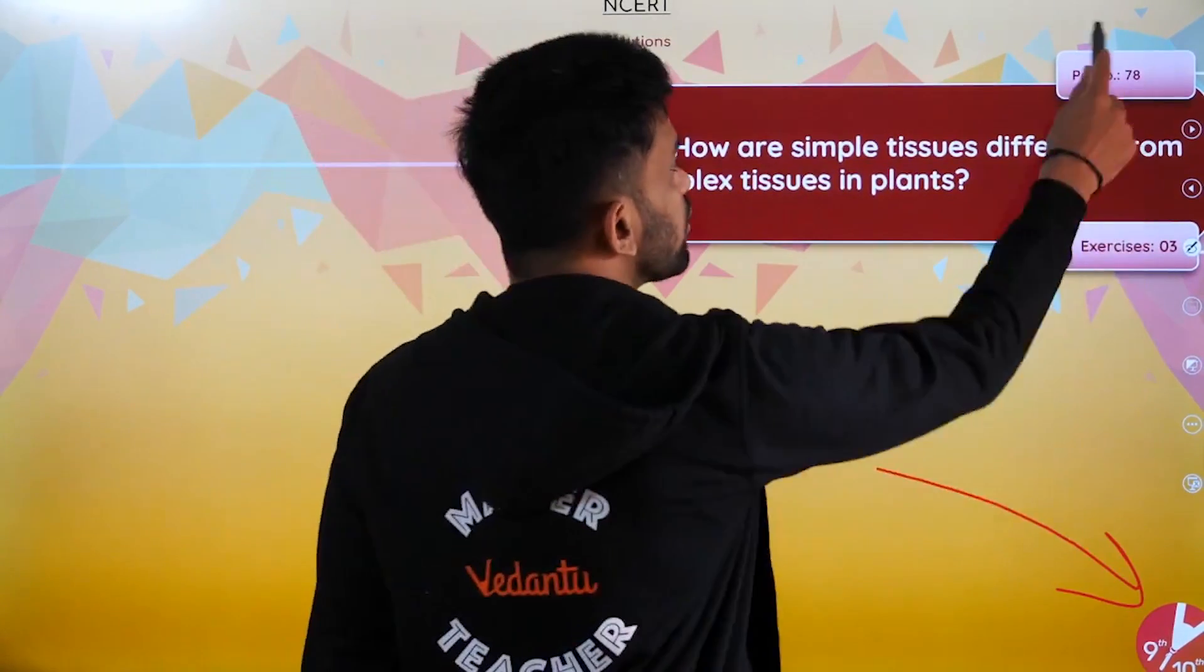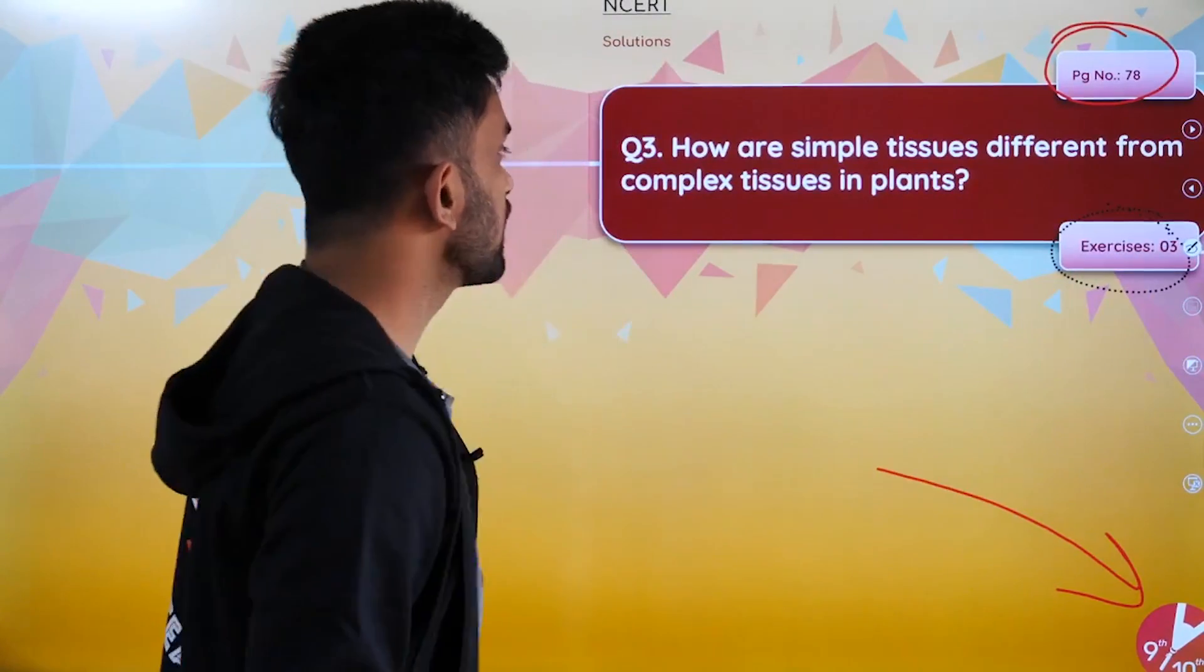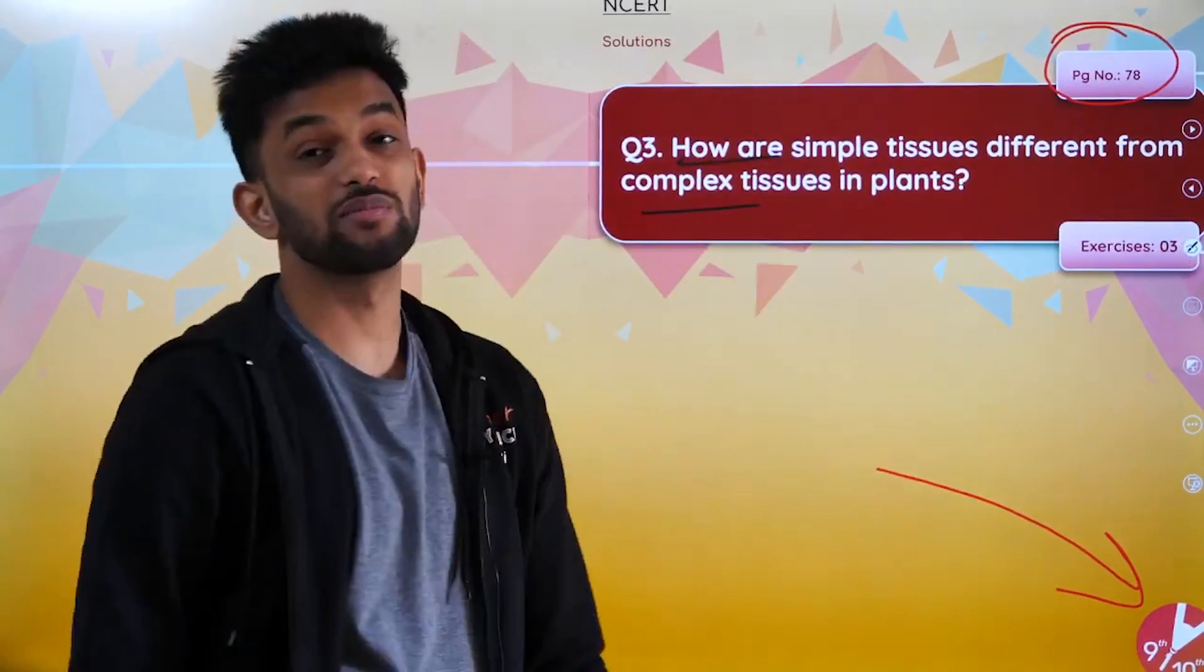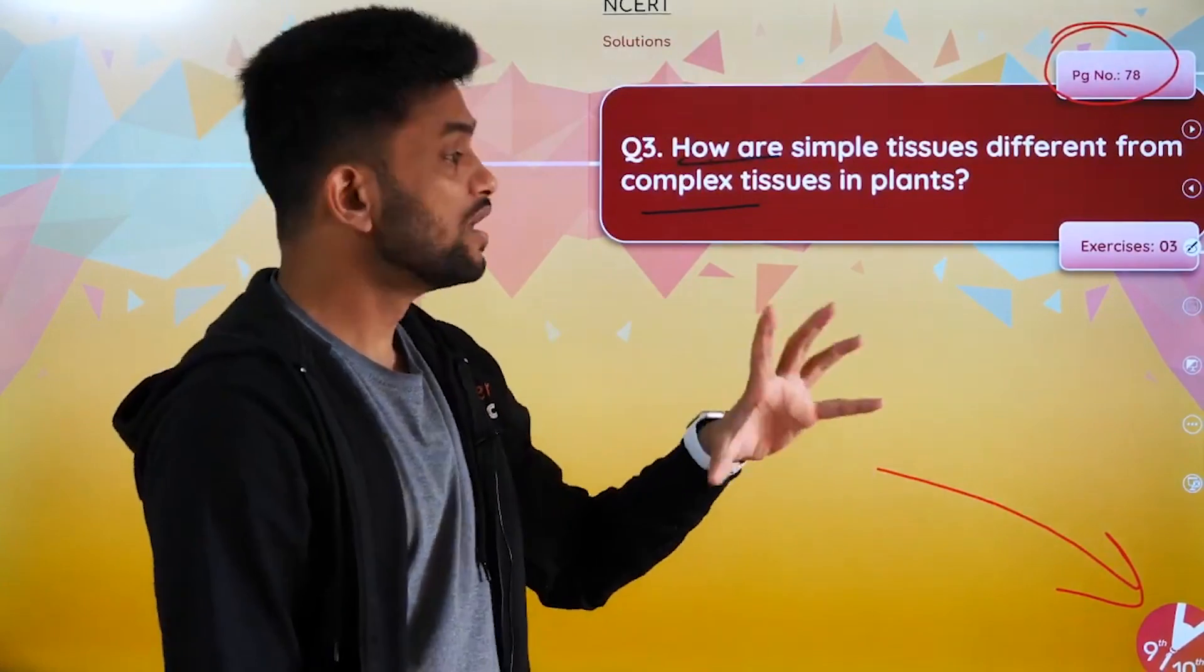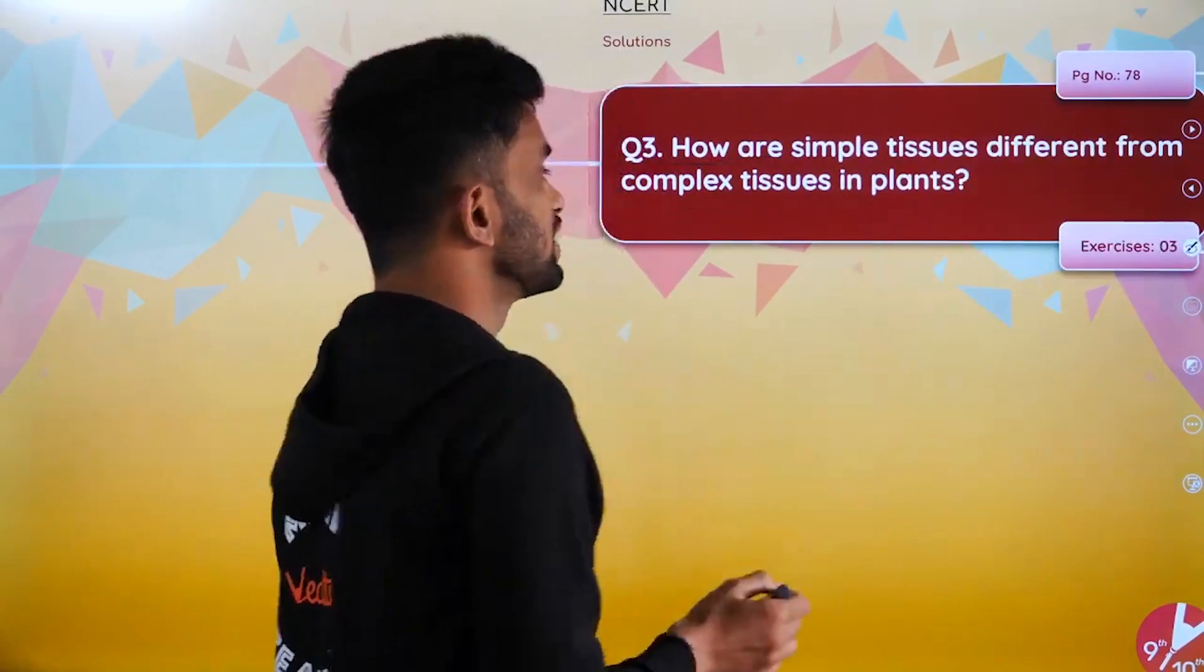Today we're going to solve page number 78, question number 3. The question asks: How are simple tissues different from complex tissues in plants? It's a very easy question. I've explained the entire concept in the chapter videos, but I will explain the answers here as well.